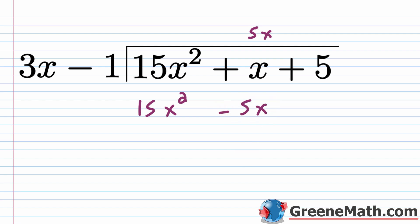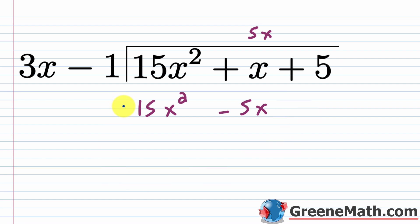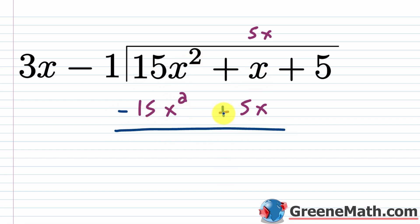Now remember, this is going to get subtracted away. You can wrap this with parentheses and put a minus out in front, which tells you to change the sign of each term inside. So let's make this a minus and this a plus. So 15x squared minus 15x squared is 0, and x plus 5x is 6x. Then drop the next term down: plus 5.